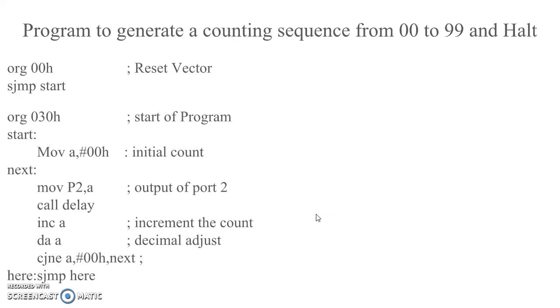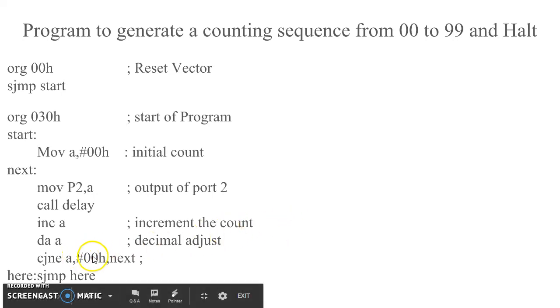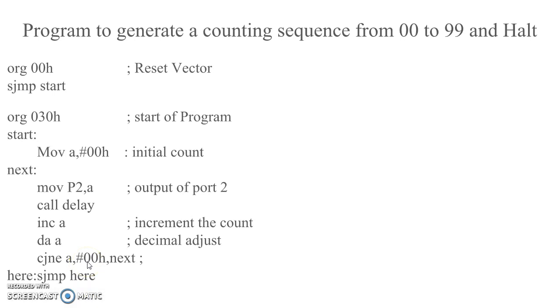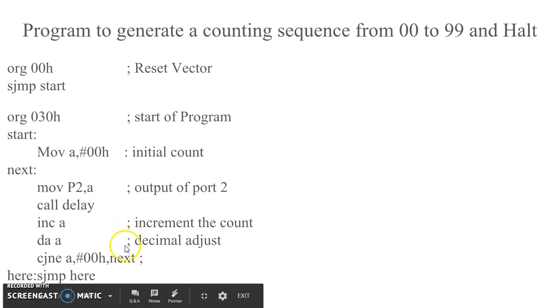If we do not want to have a recurrent counter from 99 back to 00, we can compare the count with 00 before repeating the loop. If it is not 0, that means anything between 1 to 99, it will repeat the loop. When it goes from 99 to 00, it will come out of the loop and halt by an instruction jumping at the same location.